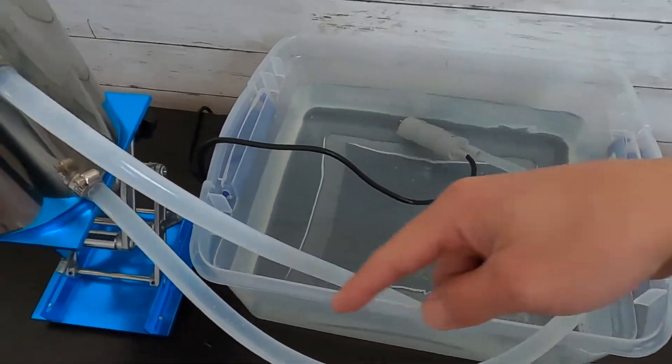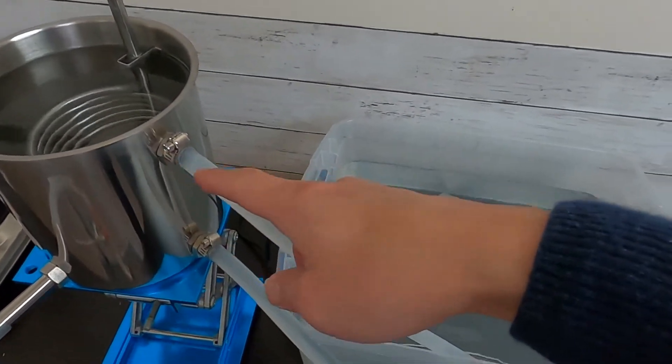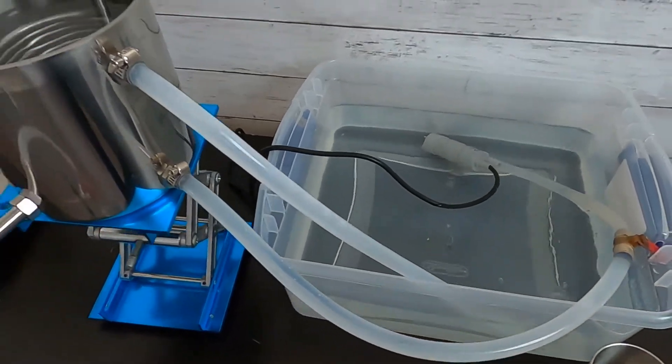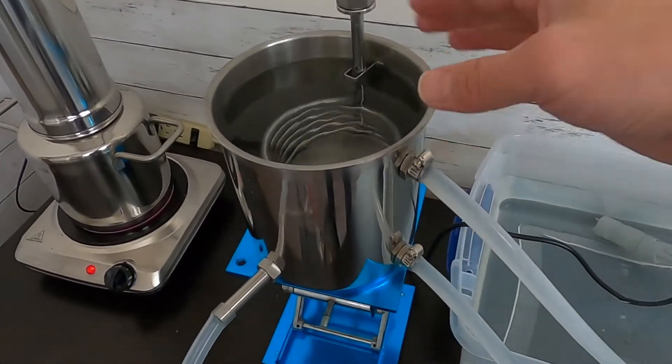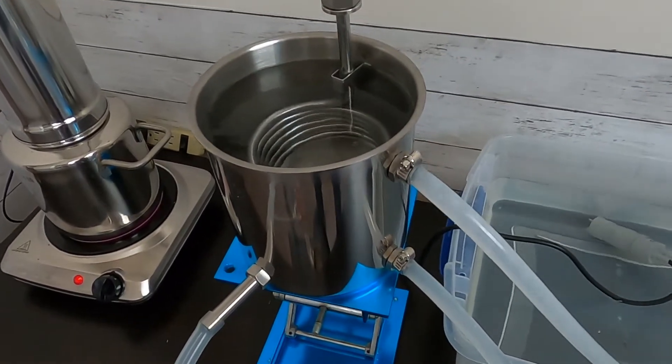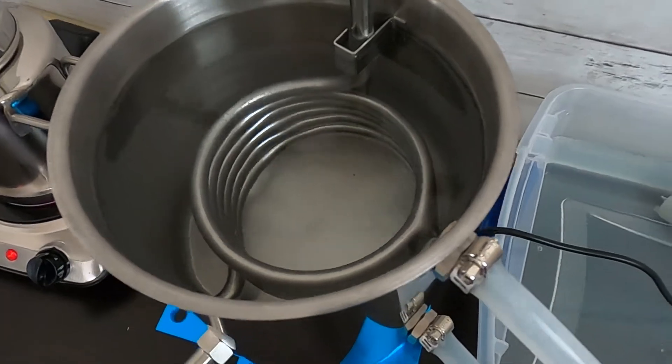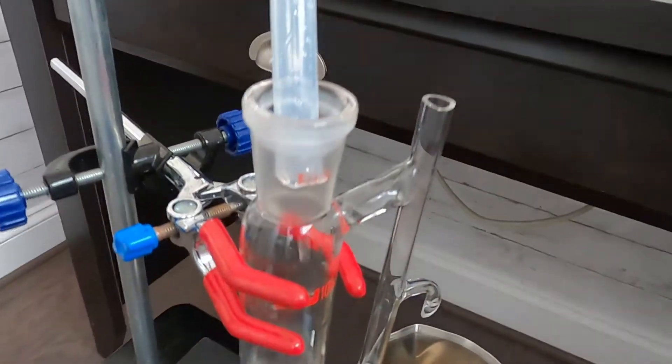The cooling water goes in at the bottom, flows up, and the hot water comes back into the container. This helps keep the temperature constant in the condensation unit.